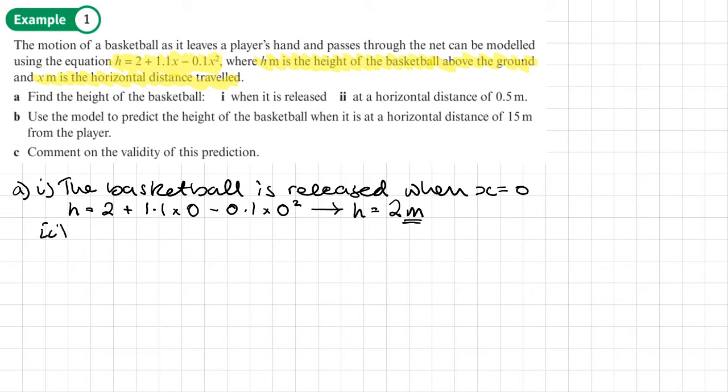The second part of part A: at a horizontal distance of 0.5 meters. That means x is 0.5. So now the formula or the equation is going to be 2 plus 1.1 times 0.5 minus 0.1 times 0.5 squared.